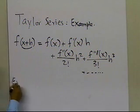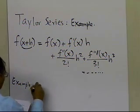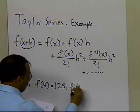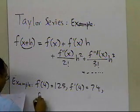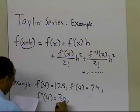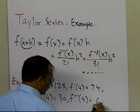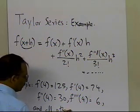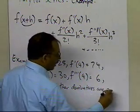In this example, suppose somebody tells you the following: you are given the value of the function at 4 as 125, the value of the first derivative of the function is given as 74, the value of the second derivative at 4 is given as 30, the value of the third derivative at 4 is given as 6, and all other derivatives are 0.